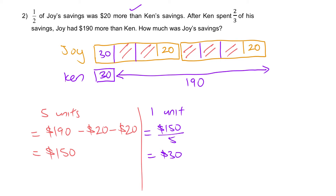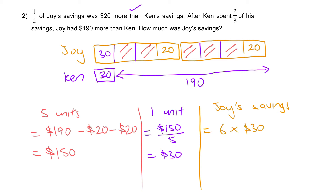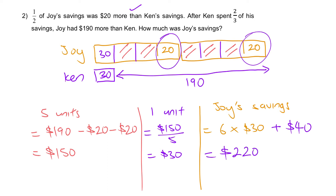Each unit is $30, $30, $30, $30, $30. Then going on to the answer: how much was Joy's savings? Joy's savings equals six units plus this $20 plus this $20, so it's 6 units plus $40. That gives 6 times $30 equals $180, plus $40 equals $220. Joy's savings were $220.